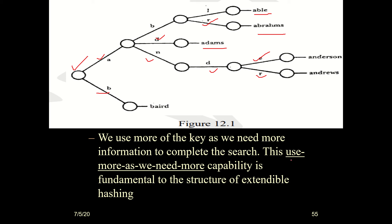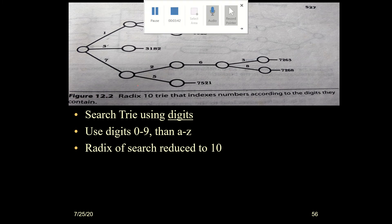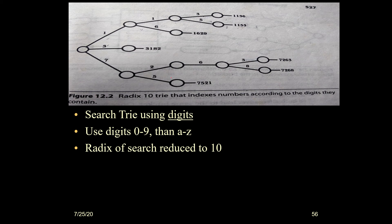We only use branches when required — use more as we need more. The second technique is using digits. For digits, we only have 0 to 9, so every node has a possibility of creating child nodes for digits 0 to 9.